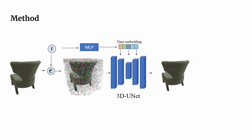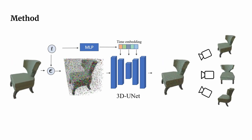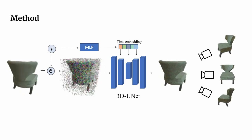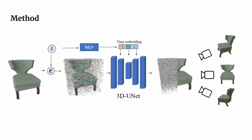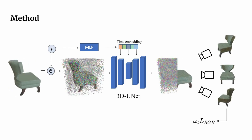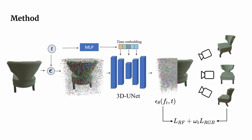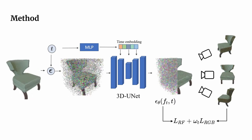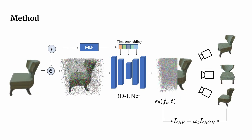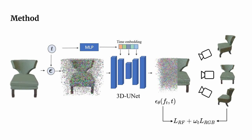We then use the predicted noise to estimate the original radiance field, render it to a set of views, and apply an image reconstruction loss together with a standard diffusion error. This process biases the model towards generating radiance fields that can be rendered to high-quality images.